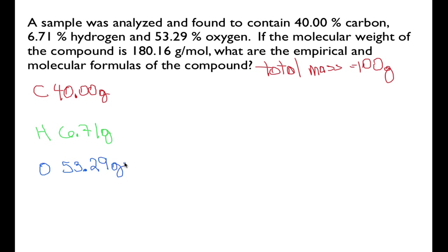So that's the trick you need to remember: if you're given a percent composition, you can always assume the total mass of the sample is 100 grams, and then you can convert directly from percents to grams. Now, the chemical formula represents the ratio of the number of atoms of each element. We have the mass data, so we need to convert our masses into moles using our molar masses.